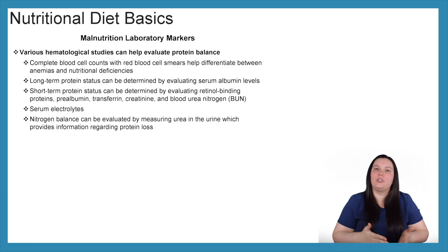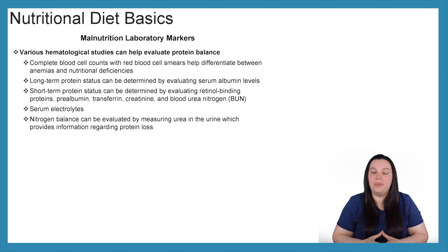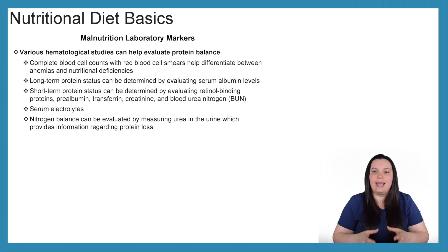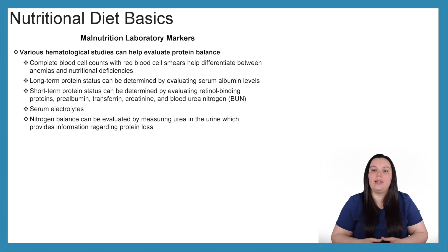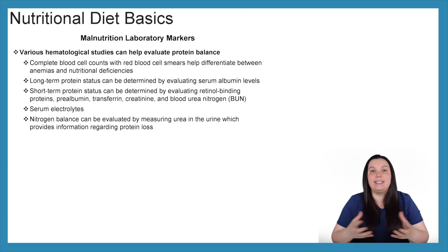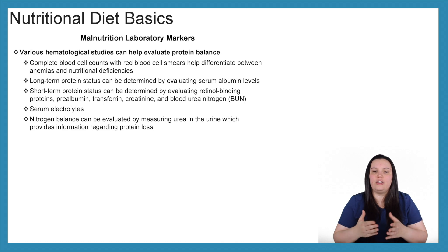So what are some malnutrition laboratory markers that we can look at when it comes to our nutritional diet basics? There are various hematological studies that can help evaluate protein balance. Our complete blood cell counts with red blood cell smears help differentiate between anemias and nutritional deficiencies. Long-term protein status can be determined by evaluating our serum albumin levels. Short-term protein status can be determined by evaluating retinal binding proteins, prealbumin, transferrin, creatinine, and blood urea nitrogen, also known as BUN. Serum electrolytes and nitrogen balance can be evaluated by measuring urea in the urine, which provides information regarding protein loss.